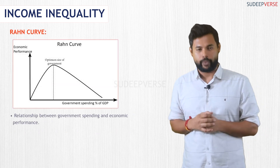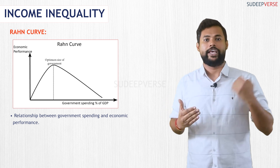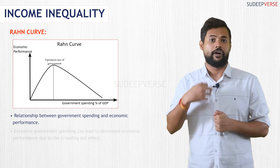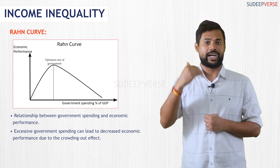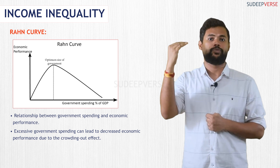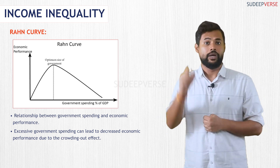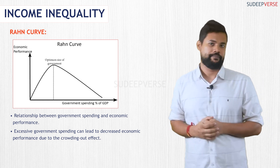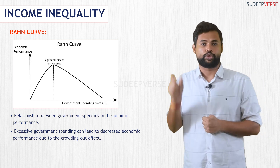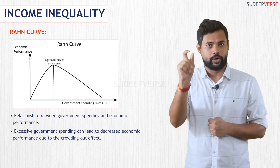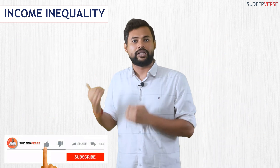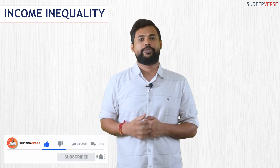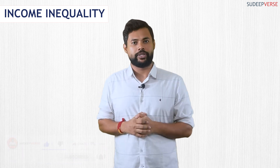The Rahn curve provides the relationship between government spending and economic performance. As you can see, government spending cannot simply be increased indefinitely to improve economic performance, because there comes a point where economic performance will drop with an increase in government spending, which signifies the crowding out effect. So the Rahn curve is used to assess the optimal level of government spending for economic growth. These are the key curves you should know from an economics perspective, especially for Prelims.